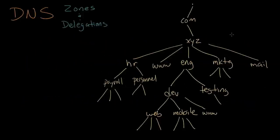By now you should have a pretty good grasp of things like domains and subdomains. If you look at a picture like this, you should be able to see things like the XYZ domain, which is inside of COM, which is underneath the root domain. But to really understand DNS, you have to learn about zones and delegations, and they're a little bit different than domains. I want to show you zones and delegations with this picture here, but not quite yet.